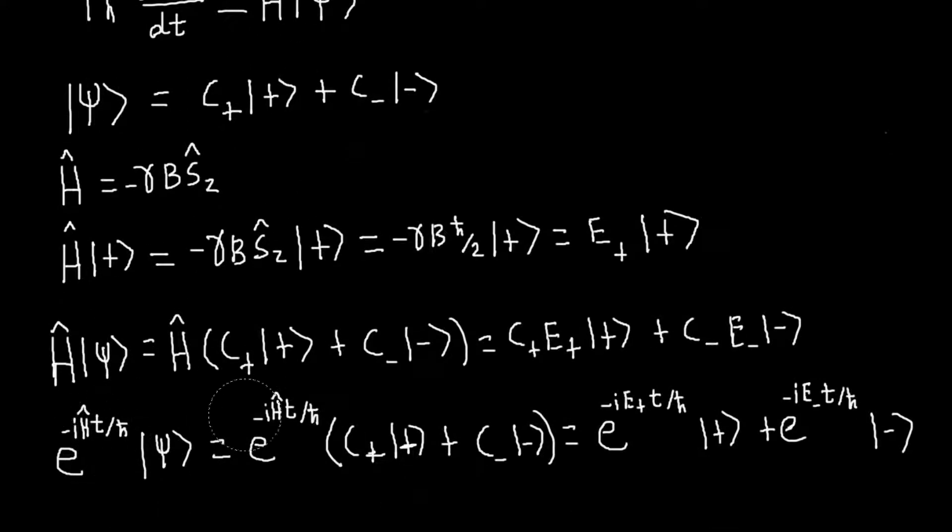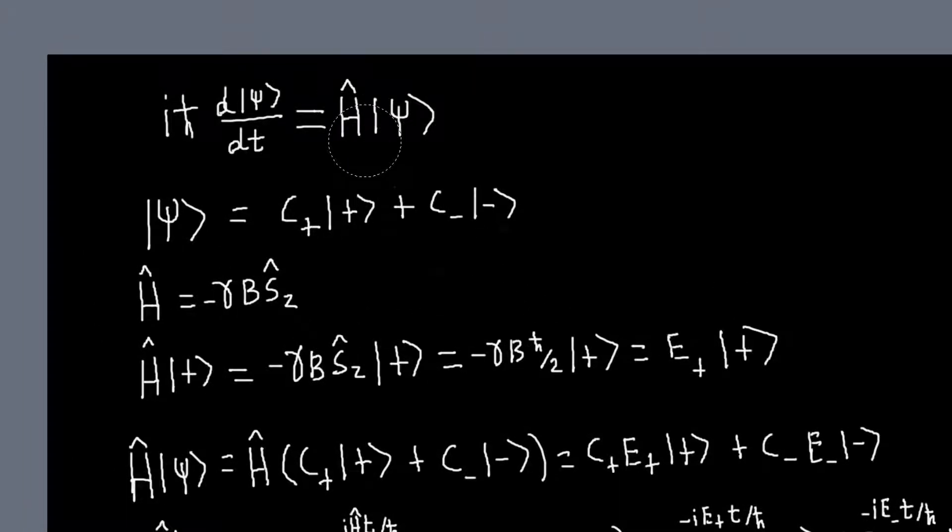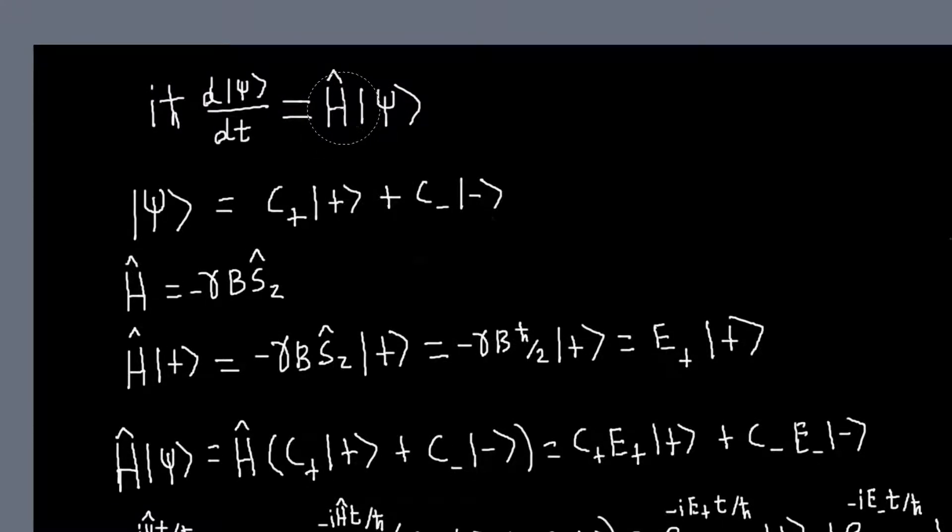We don't know how our time evolution operator acts on some basis that isn't the eigenbasis of that operator. So the thing that we need to do is find, first in a problem, the eigenstates of the Hamiltonian. So generally what we'll do is we'll write or represent our Hamiltonian as a matrix in some basis, and then we will find the eigenvalues and eigenvectors of that matrix, just using linear algebra. Hopefully you've seen that before, just finding the eigenvectors and eigenvalues of a matrix, but I'm about to work an example.